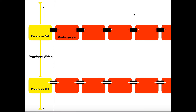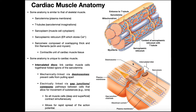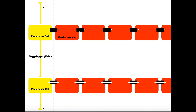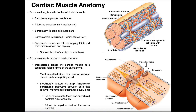Think back to skeletal muscle — to depolarize the skeletal muscle cell, we had to have sodium influx into that cell. In cardiac muscle, the ions that influx into one cardiomyocyte simply move through the gap junction into the next cell, and through the gap junction into the next cell after that. This leads to a much more rapid activation of subsequent cardiomyocytes, and that's why the heart is able to contract as quickly as it does. All of this is initiated by a cell of the electrical conduction system.